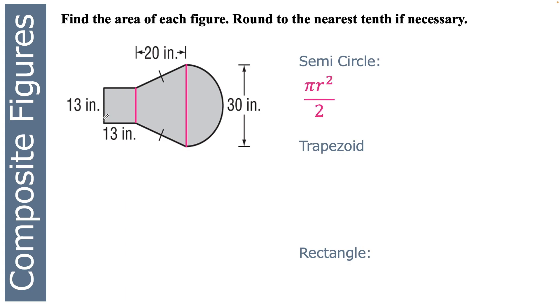So again, the area of the semicircle is πr² divided by 2. The area of the trapezoid is the two bases added together divided by 2 times the height, or the average of the bases times the height. And then a rectangle, of course, is base times height.